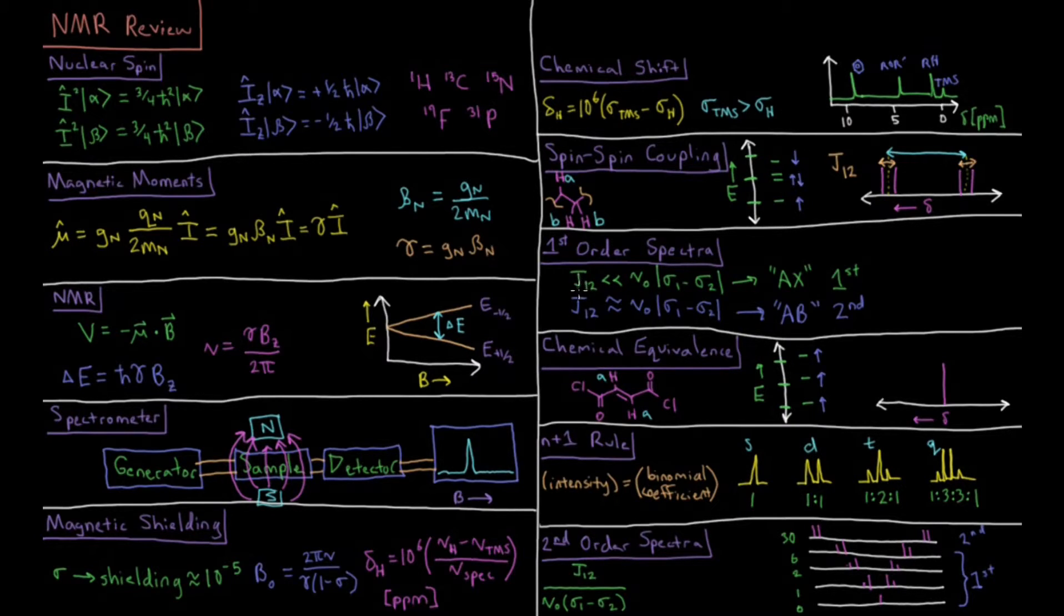When this coupling constant is fairly small relative to the separation between these peaks, we get what's called a first-order spectrum. When the coupling constant approaches the same order of magnitude as the separation between these peaks, things get complicated and we have a second-order spectrum. First-order spectrum is much simpler and can be treated by first-order perturbation theory, whereas second-order requires a linear variational method to approximate our energies.